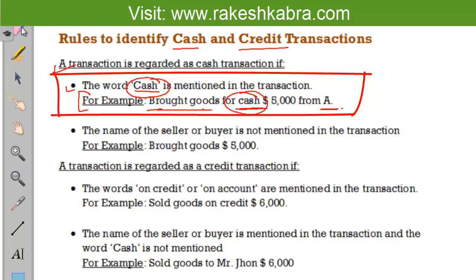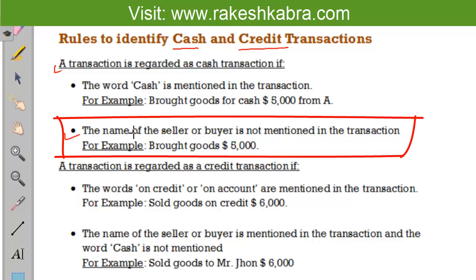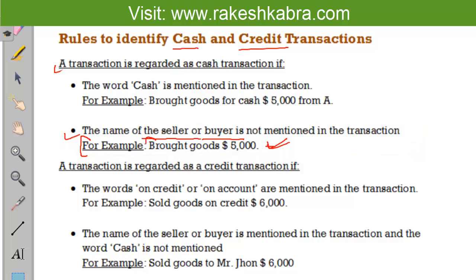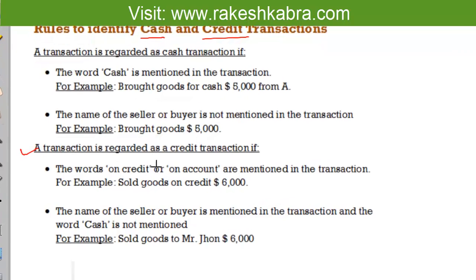If the word cash is given in the transaction, it means that is a cash transaction. Now the second rule: if the name of the supplier or buyer is not mentioned in the transaction, we will also assume the transaction is conducted on a cash basis. For example, 'Brought goods $5,000' — the name of the supplier is not given, so we assume we brought goods and paid money to the supplier. This is also a cash transaction.